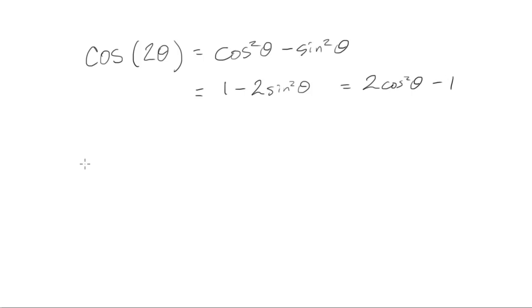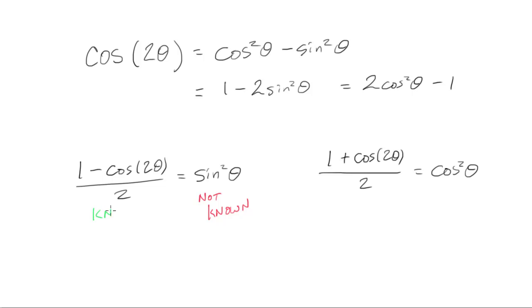Solving for the squares. Sine squared, we don't know how to integrate, but cosine and one, we do know how to integrate. So I turn something not known into something known.